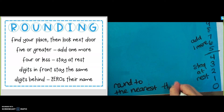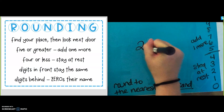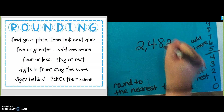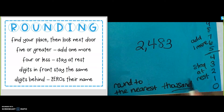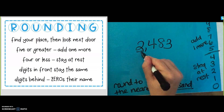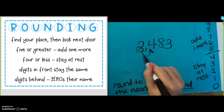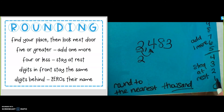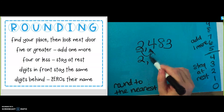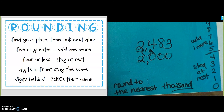Now let's try the thousands. Round to the nearest thousand. My number is 2,483. Find your place — my place is the thousands. Look next door. Next door is a 4. 4 or less, stay at rest. So that means I'm going to keep the 2 the same. I'm not going to add one more. I'm going to keep the 2 the same because 4 or less stay at rest. All the numbers after it become a 0. When I round 2,483 to the nearest thousand, I get 2,000.